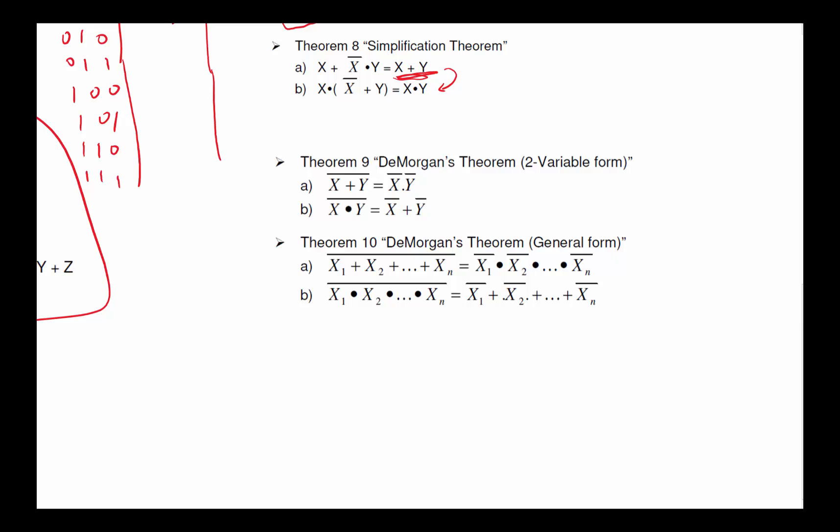DeMorgan's theorem. I can write (X AND Y)' as X' OR Y'. This one is important enough that we're going to do the dual form of it too. It says (X OR Y)' is X' AND Y'. So look at what it does. It takes an AND, turns it into an OR. Takes an OR, turns it into an AND.